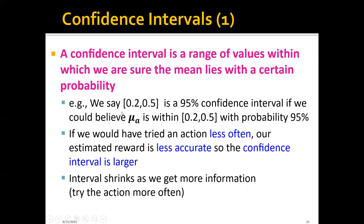For example, let's say that 0.2 to 0.5 is a 95% confidence interval. We believe that the ground truth μ_A is within this range with probability 95%. This μ_A is the ground truth expected reward — not the estimated reward we calculate from the average, but the actual one. If we tried that action less often, our estimated reward would be less accurate, so the confidence interval would be larger. The confidence interval will shrink as we get more information — if we try the action more often, we get more information and the confidence interval shrinks.